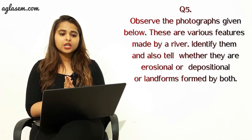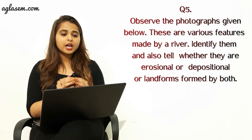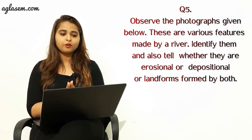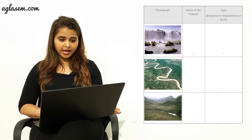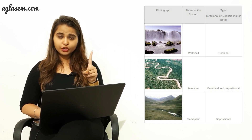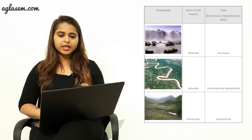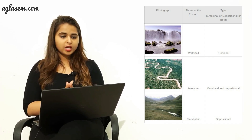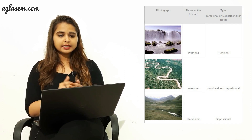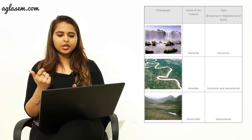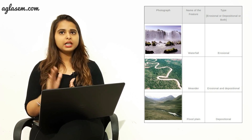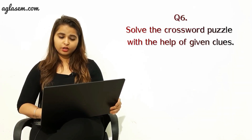The fifth question: observe the photographs given below — these are various features made by a river. Identify them and tell whether they are erosional, depositional, or both. You can see the pictures on screen. The answers are: first photograph — waterfall, type: erosional; second picture — meander, type: erosional and depositional; third picture — flood plains, type: depositional.